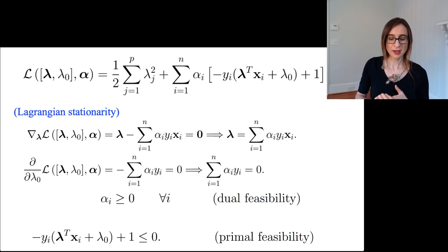Then I have my constraints. The alphas have to be non-negative because otherwise the Lagrangian is not a good lower bound for the primal objective. We have primal feasibility, which is just that all of those unnormalized margins have to be at least one.